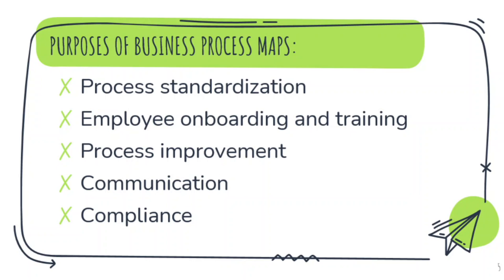Business process maps are also used for employee onboarding and training. Especially in HR, when training new employees who can't memorize everything right away, seeing the process maps makes it easier for them to understand the processes being discussed. We also need business process maps for process improvement — for example, if you've followed the process map and didn't achieve your goal, such as making 100 burgers in a day, that means there is a problem with the process. You can check and assess the map to find where improvement is needed.